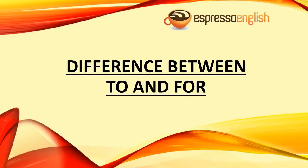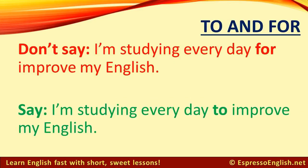Difference between 'to' and 'for', from Espressoenglish.net. Don't say: 'I'm studying every day for improve my English.' The correct sentence is: 'I'm studying every day to improve my English.'